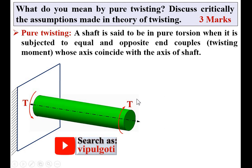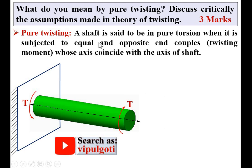This is in the clockwise direction and this is in the anticlockwise direction — so equal and opposite couples at the two ends of the shaft. Sometimes it is called couples, or you can say it is a twisting moment whose axis coincides with the axis of the shaft. If you see, the axis of this twisting moment coincides with the axis of the shaft. So this is the definition of pure twisting.